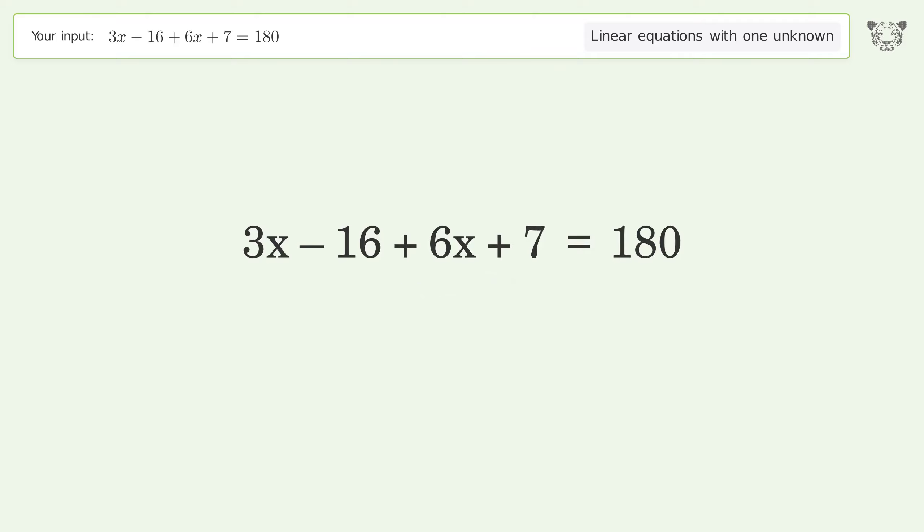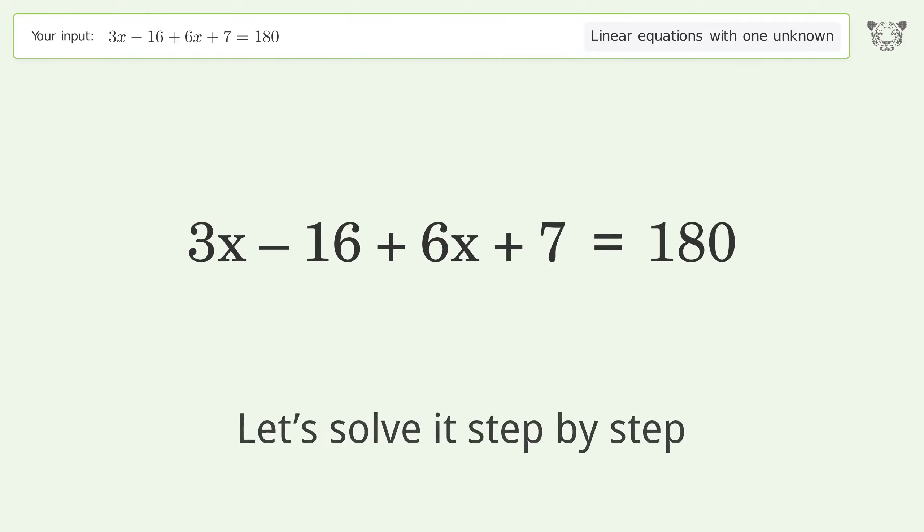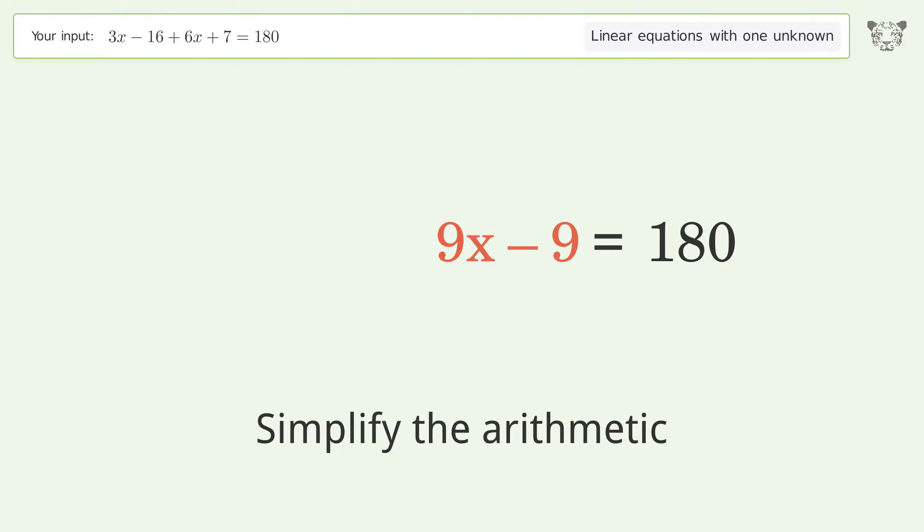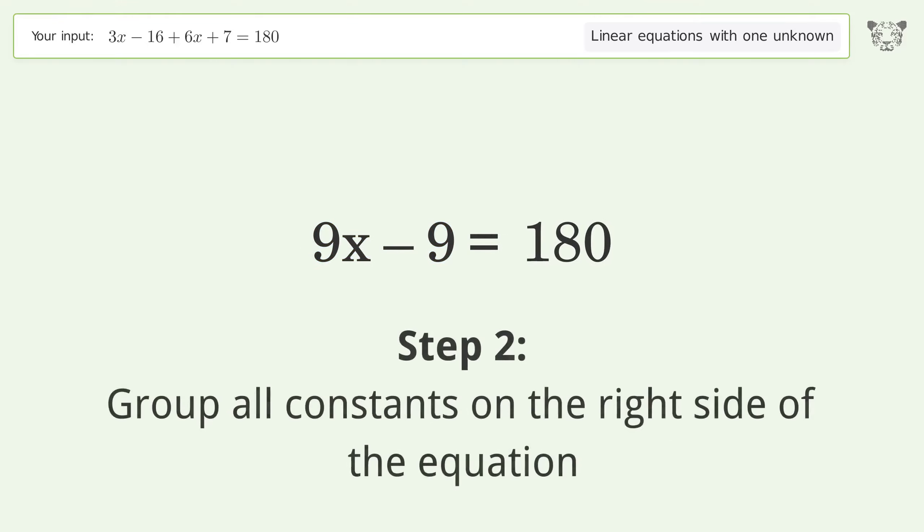Let's solve it step by step. Simplify the expression. Group like terms. Simplify the arithmetic. Group all constants on the right side of the equation.